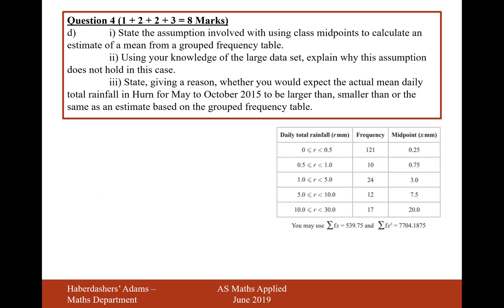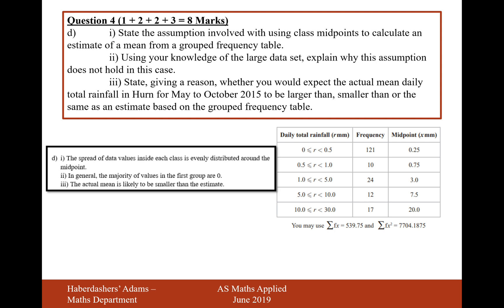Let's move on to part D now. So we've got a few little wordy questions here. Part D(i) is state the assumption involved in using the class width to calculate an estimate for the mean of a grouped frequency table. Well, the answer to that is the spread of data values inside each class is evenly distributed around the midpoint. So what we're assuming here, for example, in this group here, is that the daily total rainfall between 1 and 5 will be evenly spread throughout that group.